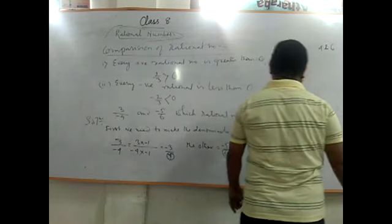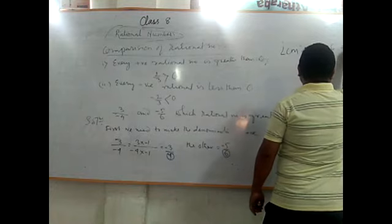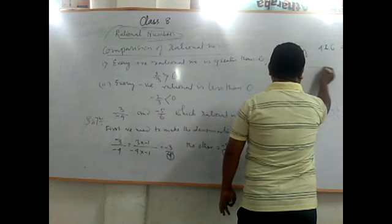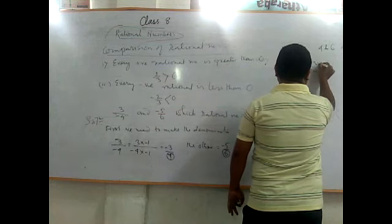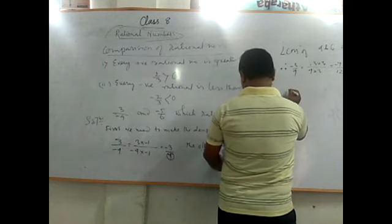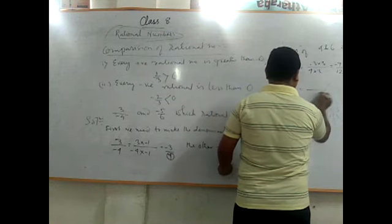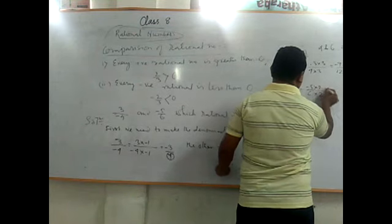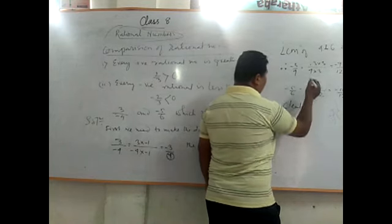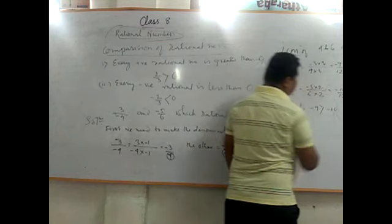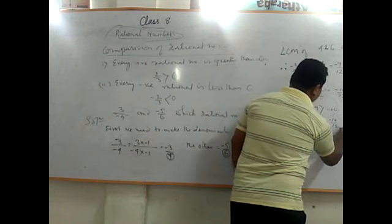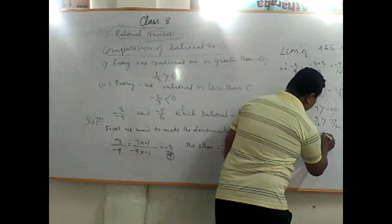Clearly, minus 9 is greater than minus 10. Therefore, minus 9 by 12 is greater than minus 10 by 12 — that is, 3 by minus 4 is greater than minus 5 by 6. This is how we compare two rational numbers.